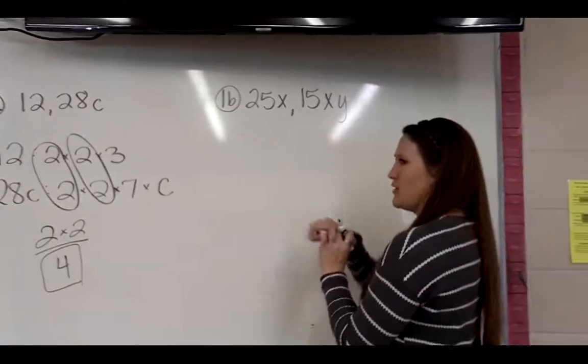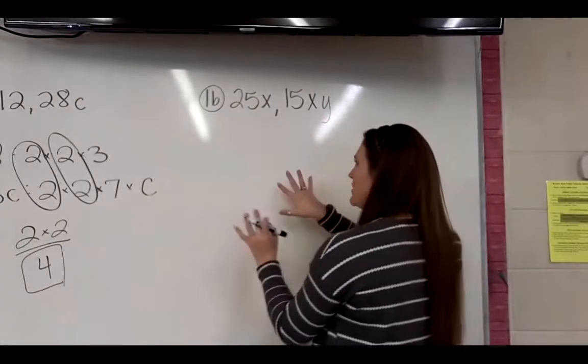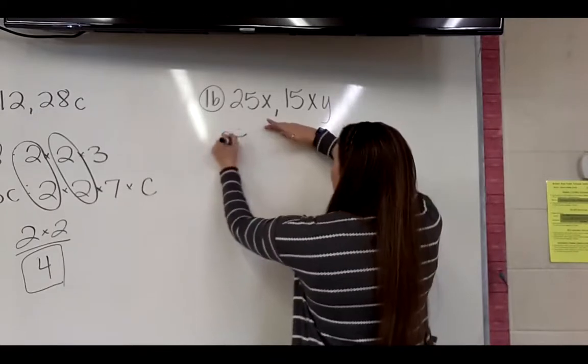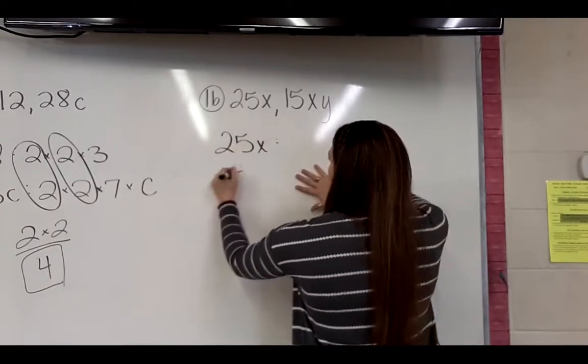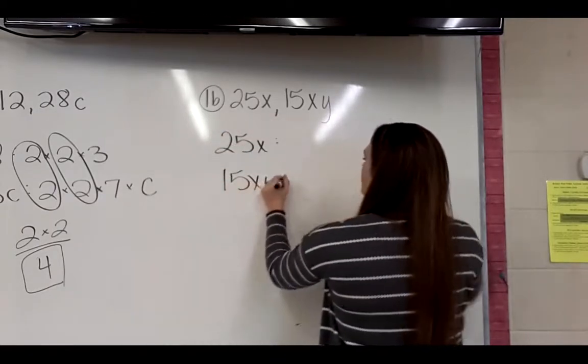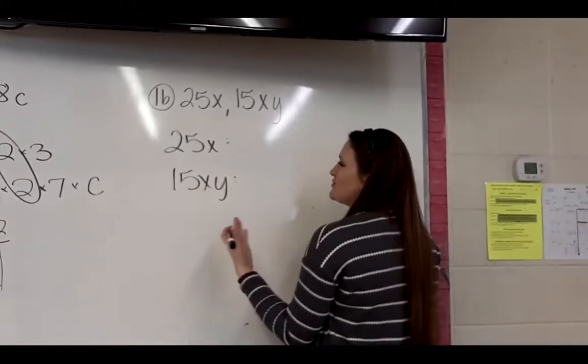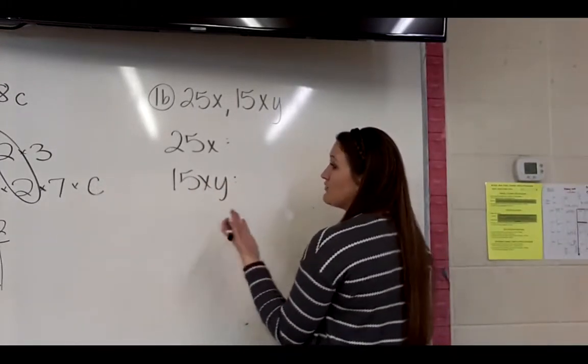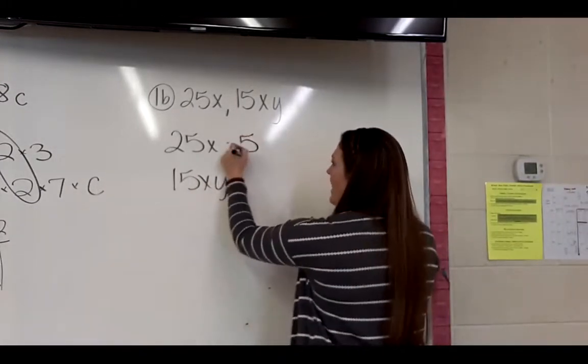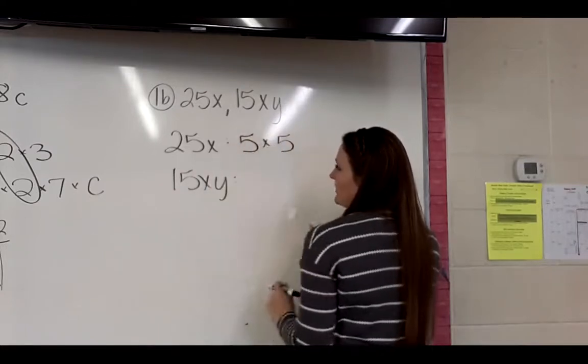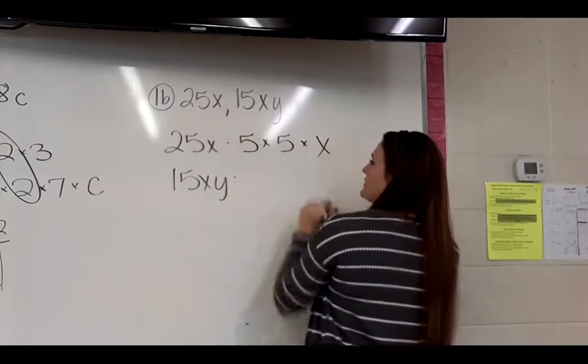Looking at 1b, the bell might ring on us in just a second on my video. 25x and 15xy. So 25x, I can break that down into 2 doesn't go in there, 3 doesn't go in there, 4 doesn't, but 5 does. I know 5 times 5 is 25. 5 is also prime. Then we have times x.